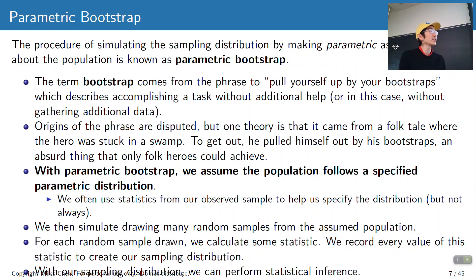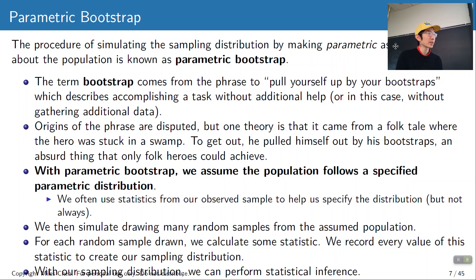If we assume the population looks like this, let's draw random samples from this population. For each random sample, let's calculate some kind of statistic. We record this a bunch of times and create a sampling distribution this way. And then once we have a sampling distribution, we can do statistical inference.